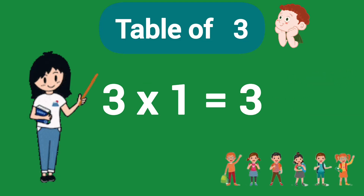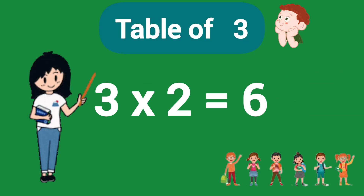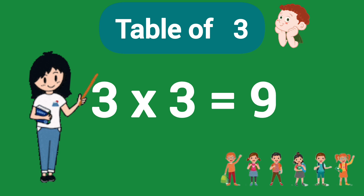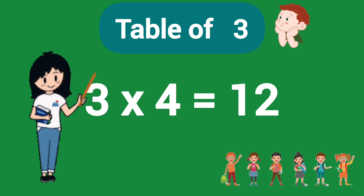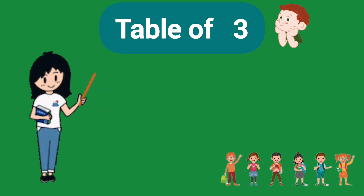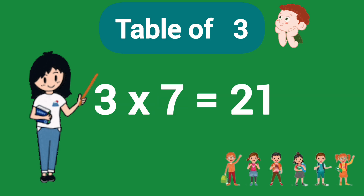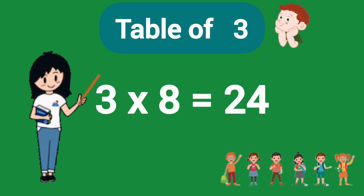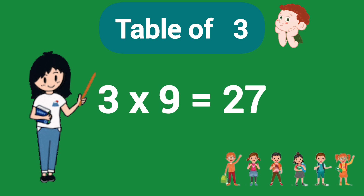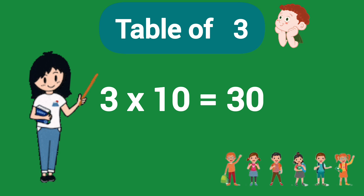Table of 3: 3×1=3, 3×2=6, 3×3=9, 3×4=12, 3×5=15, 3×6=18, 3×7=21, 3×8=24, 3×9=27, 3×10=30.